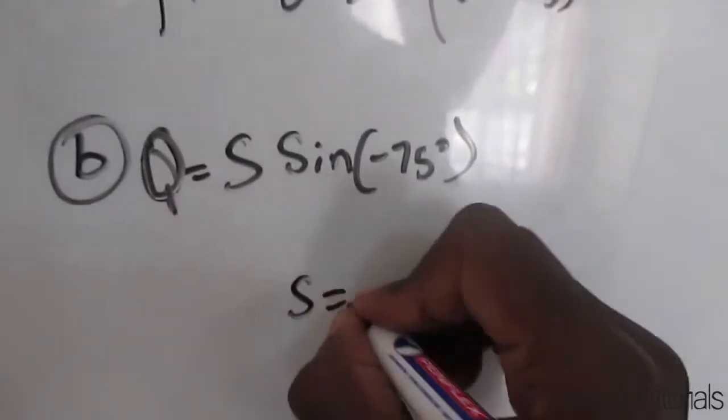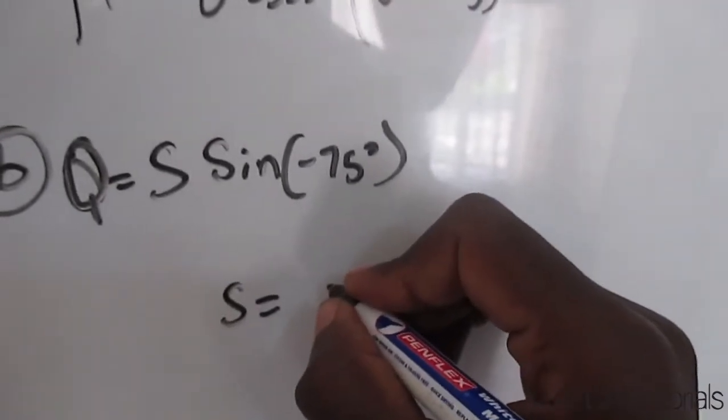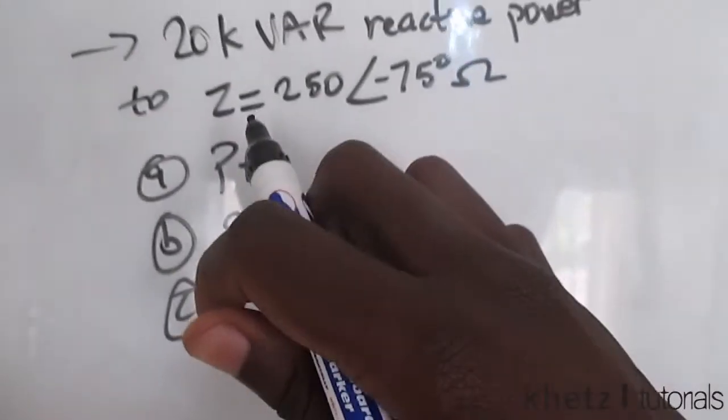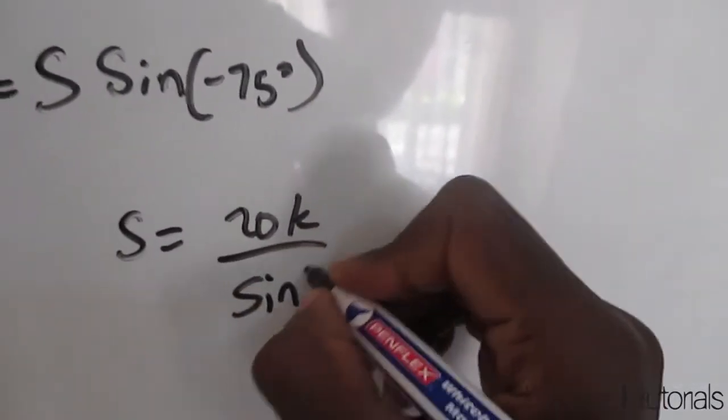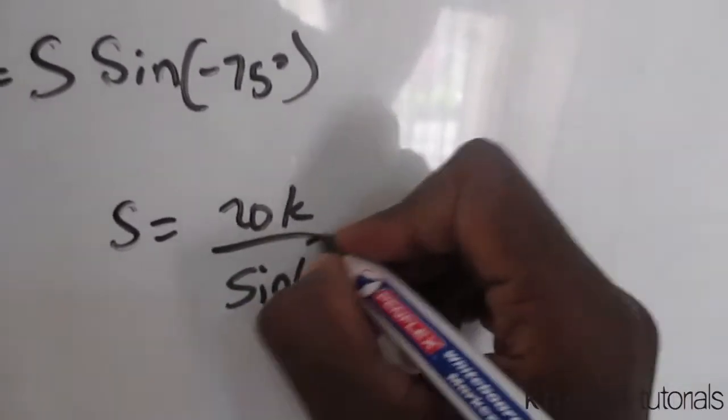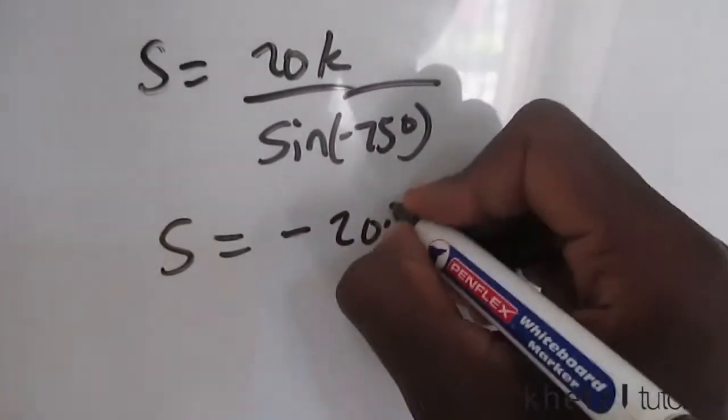We can find this value of S to be Q, which we are given in the question as 20k, 20,000 divided by sine negative 75 degrees, and you should find a value of negative 20.71k.